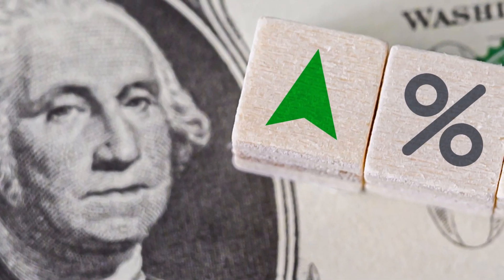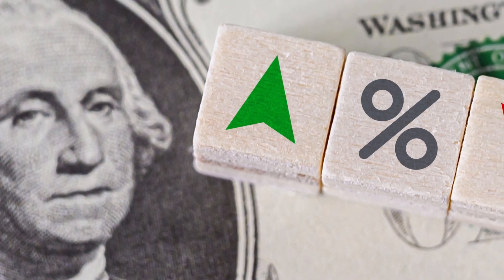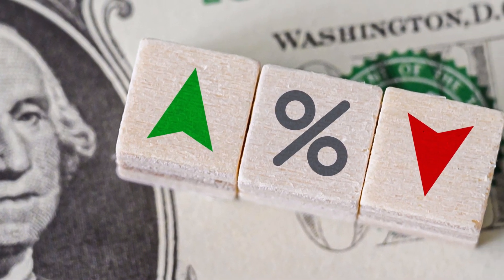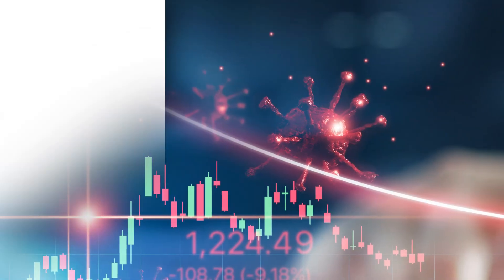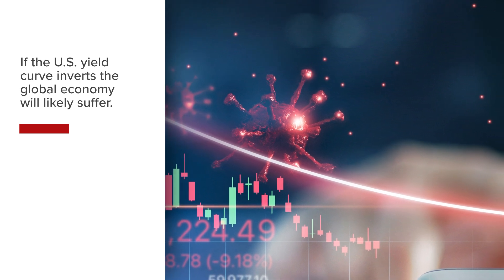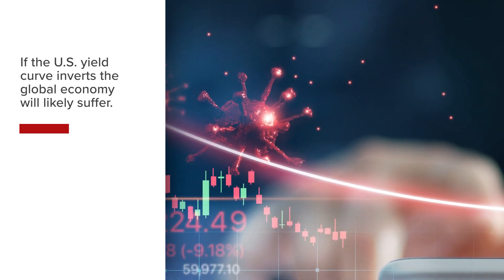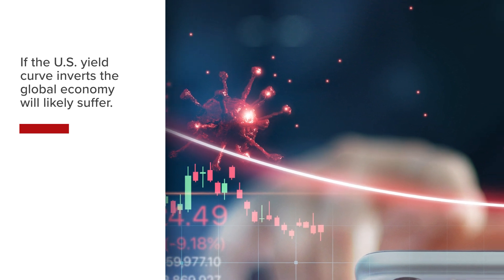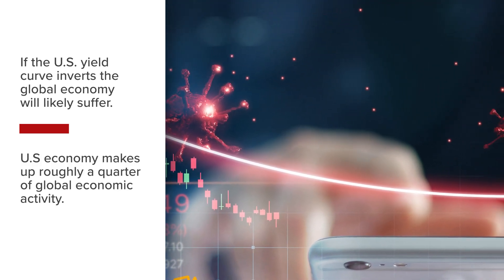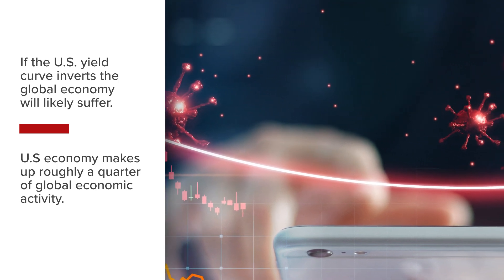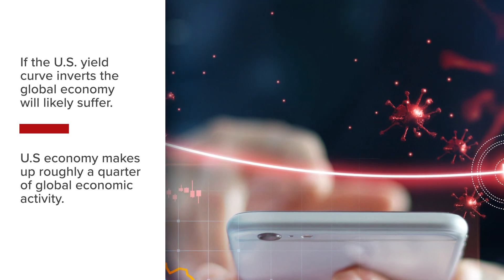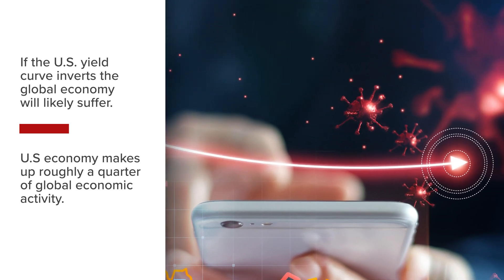When market participants disagree with the Federal Reserve's policy on rate setting and bond purchases, distortions and inversions across the curve can manifest. If the yield curve inverts in the US like it did prior to the 2008 financial crisis and the 2020 COVID-19 recession, the global economy will likely suffer economic consequences as well. The global economy depends a lot on the health of the US economy as it makes up roughly a quarter or 25% of global economic activity.